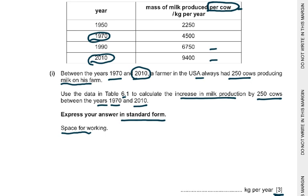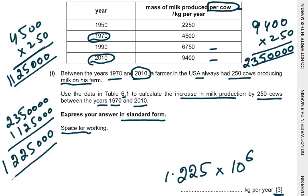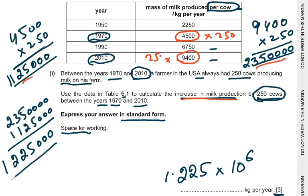From a B you can go into an A, from an A you can go into an A star. Basically what you have to do is multiply 4500 by 250, and then multiply 9400 by 250. You get these two figures, then you minus them because it says increase in milk production. Then for standard form, you count the digits: one, two, three, four, five, six — put a dot. So 1.25 × 10^6 and you get your three marks.